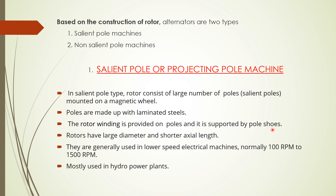The function of the pole shoe is to support the poles and carry the field windings, or simply the rotor windings. The rotor has a large diameter and shorter axial length because it consists of a large number of poles. In order to carry a large number of poles, the rotor must have a large diameter and shorter axial length — this is a very important point for technical exams.